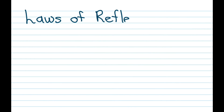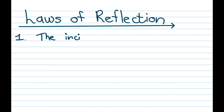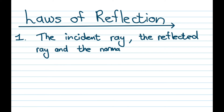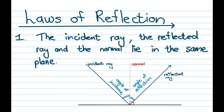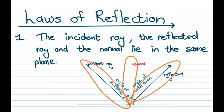When it comes to reflection there are three laws. The first law says that the incident ray, the reflected ray, and the normal all lie in the same plane. If we look at our picture, you can see that all three of these are on the same side of the reflective surface.